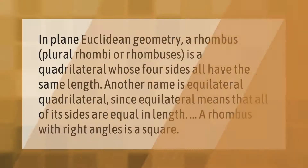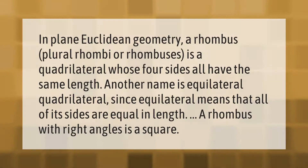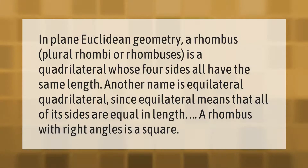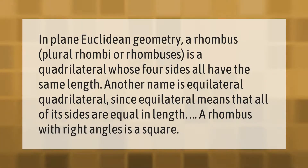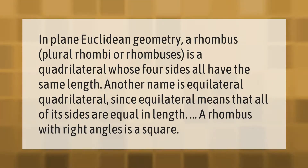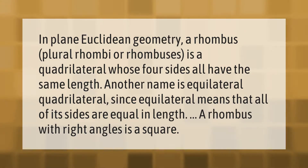In plain Euclidean geometry, a rhombus (plural: rhombi or rhombuses) is a quadrilateral whose four sides all have the same length. Another name is equilateral quadrilateral, since equilateral means that all of its sides are equal in length. A rhombus with right angles is a square.